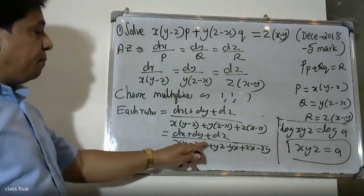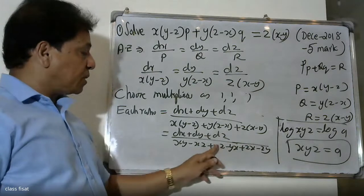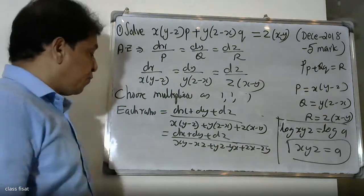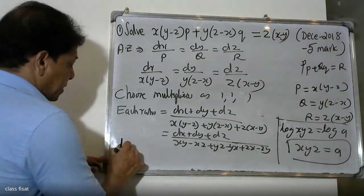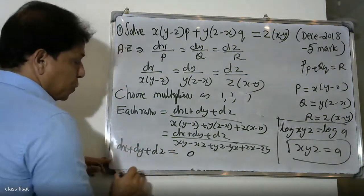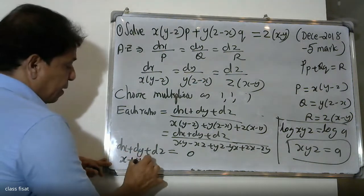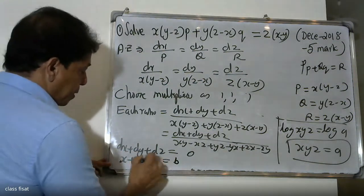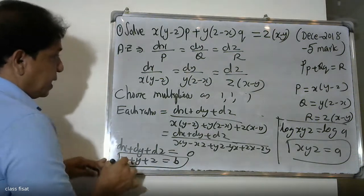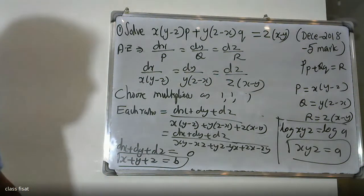The terms cancel: xy - xz + yz - yz + zx - zy. Therefore dx + dy + dz = 0. Integrating: x + y + z = constant. So x + y + z = k is our second constant.